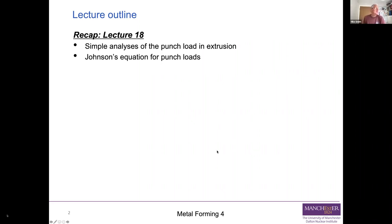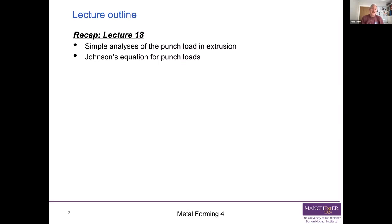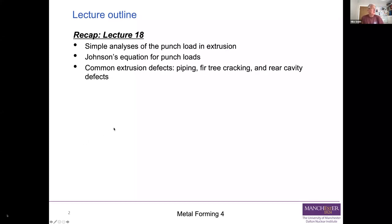We then took those on to look at something called Johnson's equation for extrusion, where he modified the simple extrusion equations based upon experiment to take account of friction and redundant work. Our simple estimates were underestimates of the punch load, and Johnson allows us to make a more accurate estimate. We also spent a little bit of time looking at extrusion defects, such as piping, fir tree cracking, and rear cavity defects.